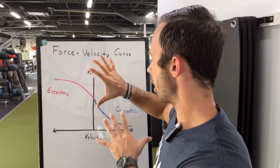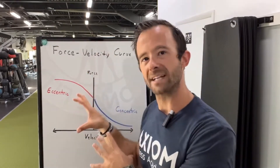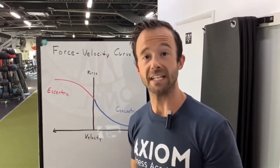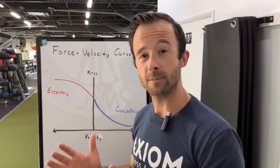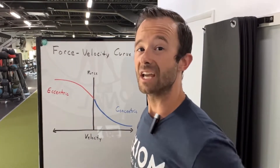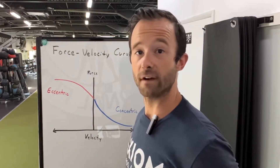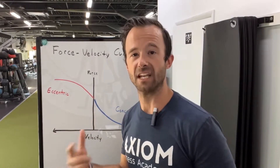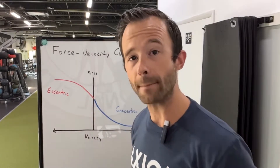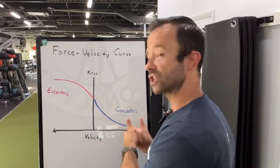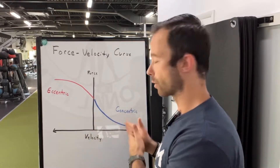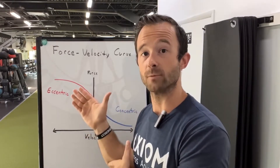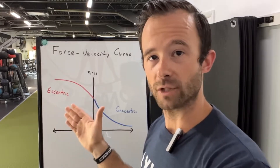Going away from the back squat example, think about sprinting. In a 40-yard dash, you're moving very quickly — you have a high velocity of contraction — which means your force production is going to be on the lower end, especially in comparison to those maximal strength type movements.